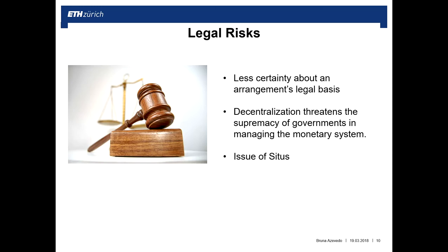With reduced regulation, another problem is the issue of situs — every contract and asset needs a location in order to apply a legal jurisdiction. Currently, if an asset is not materialized, its location is where the register is held. With a network of nodes, the register is distributed across many nodes, making it difficult to define a location for legal jurisdiction.